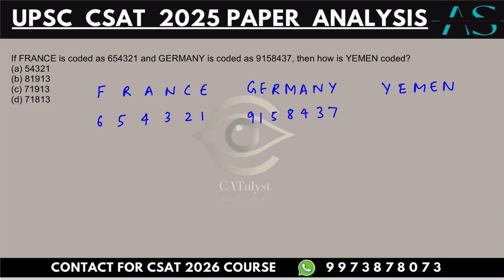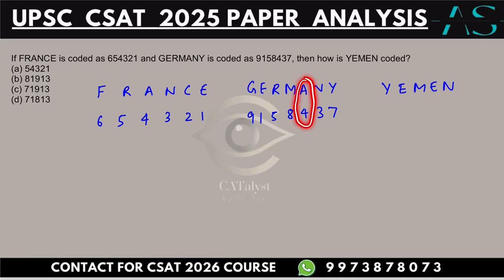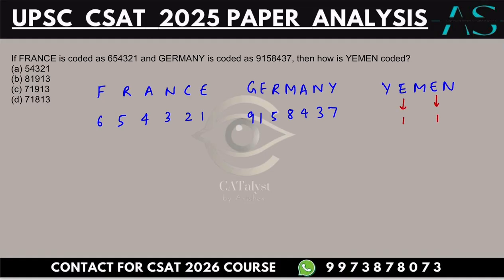We only have to look out for the common elements. For example, 'e' here is one, and 'e' here also is one — so we know the code for 'e' is actually 1. Next, any other common element: 'a' is 4, and 'a' is 4. We just have to stick to these data and get the value for Yemen.